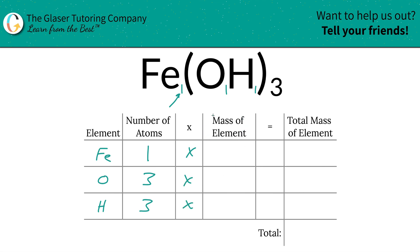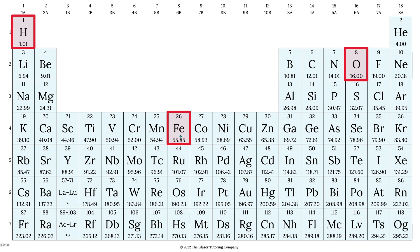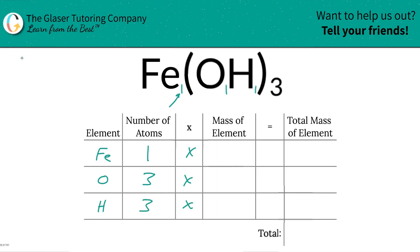Then we're going to find the masses of the elements. Where do we find these? On the periodic table. So iron's mass is going to be 55.85, oxygen is 16, and hydrogen is 1.01, and those are the masses we're going to write down.